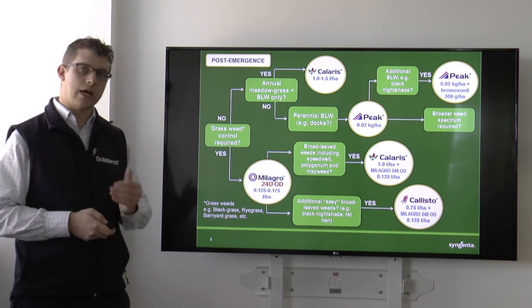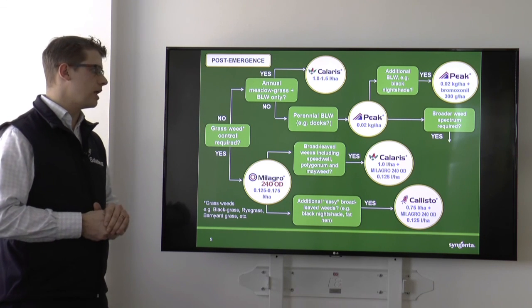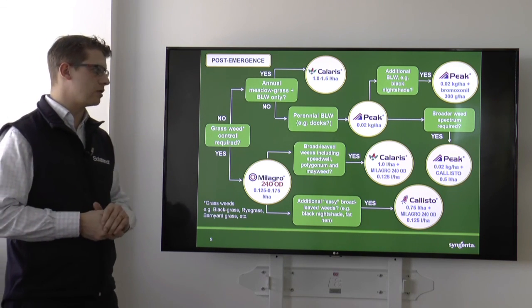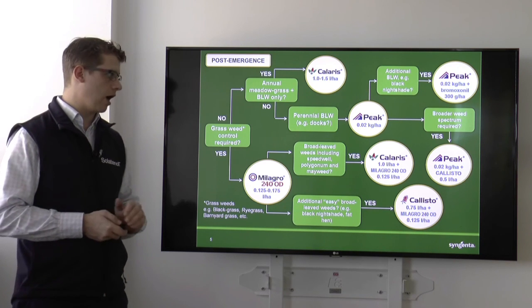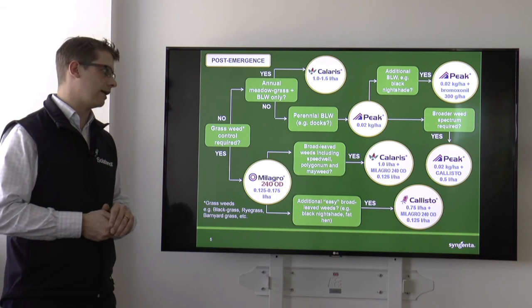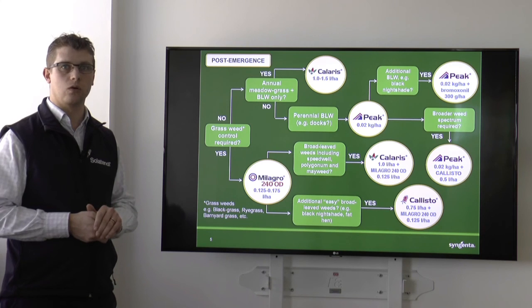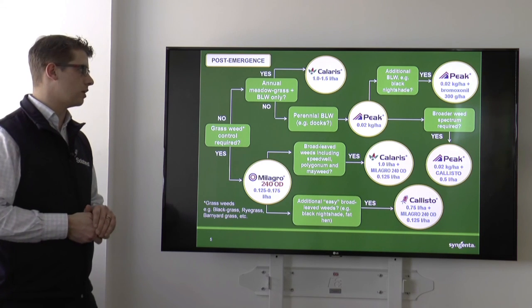If we didn't want to add that Bromoxynil in, but we wanted to broaden our spectrum out with our Peak, then we could suggest adding in Callisto at half a litre a hectare to our 0.02 kilos a hectare of Peak, and that will give us some good control of broadleaf weeds as well.